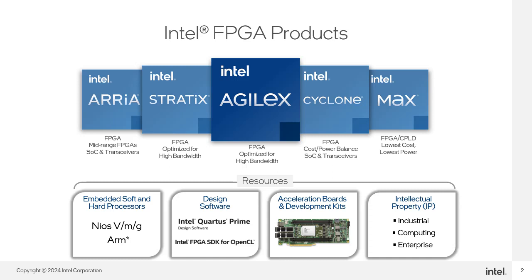The Intel FPGA portfolio supports this transformation, including discrete and integrated FPGAs that are expected to improve processing efficiency, specificity, and connectivity. Intel FPGAs can provide a variety of workloads and network processing, as well as compute and storage acceleration. FPGAs are mass-produced standard product ICs that can be reconfigured in the field to accelerate virtually any digital algorithm. They offer greater throughput, execution speed, and energy efficiency than CPUs on computationally intensive parts of algorithms.